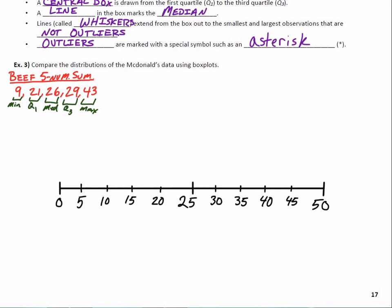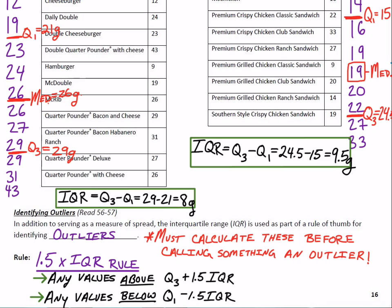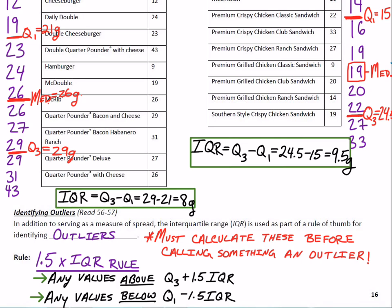Before we get to the fish sandwiches, let's look at that 43 for the beef. If we pay close attention, that's actually an outlier. Let's go back and look at that data — using the IQR rule, we know the IQR is 8. If we look at Q3 plus 1.5 times the IQR, this 43, the max, ends up being an outlier.